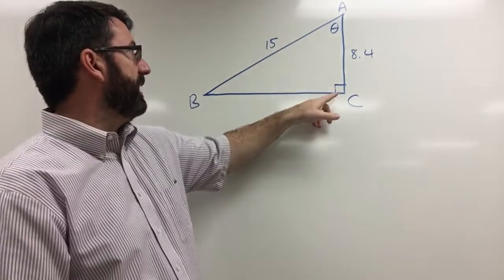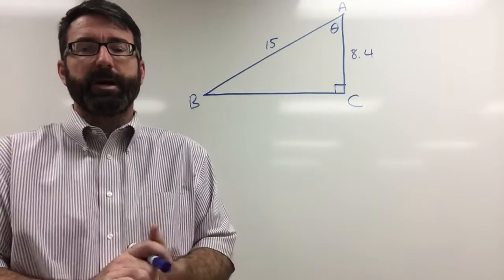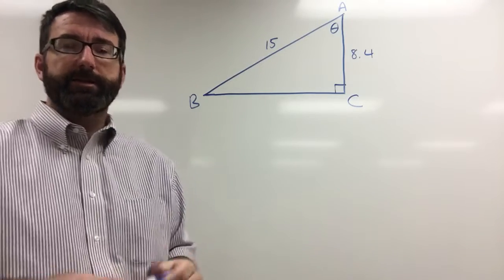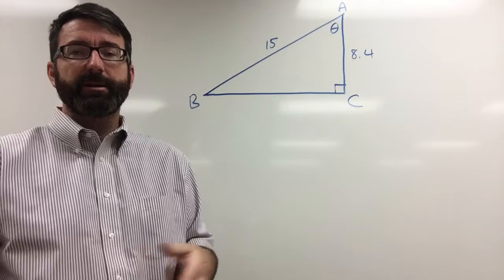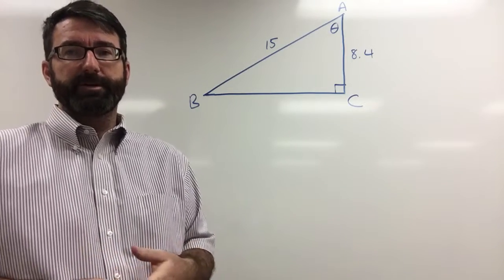If this is a right triangle then we don't have to worry about the law of sines or the law of cosines or anything like that. This is going to just be SOH CAH TOA: sine is equal to opposite over hypotenuse, cosine is equal to adjacent over hypotenuse, tangent equals opposite over adjacent.